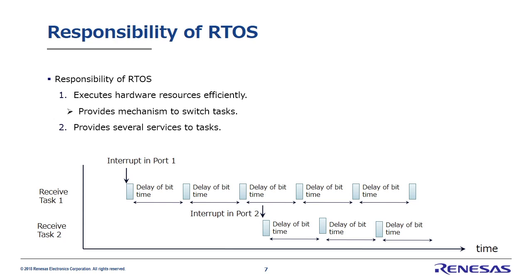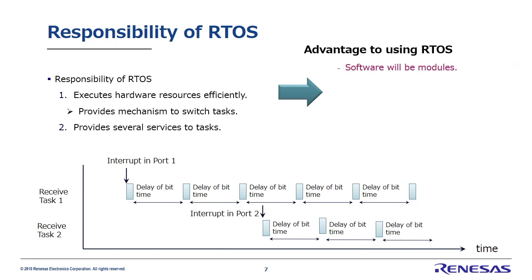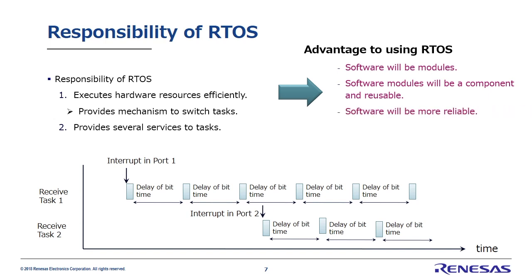What's more, it offers services to each task through system calls. We just introduced the delay system call, but the RTOS can provide many other functions through system calls. Using RTOS facilitates software modularization. In addition, you can use the services RTOS offers in software development, and using these software modules as components allows easy reusability. The simple structure of tasks themselves helps improve overall reliability, since you can use system calls to run complex functions as tasks. The RTOS handles task switching and other complex functions, which helps improve software development productivity. These are the key benefits of using RTOS.